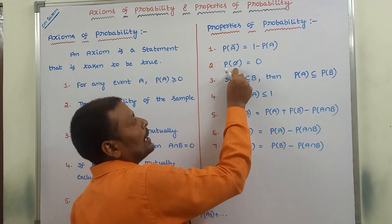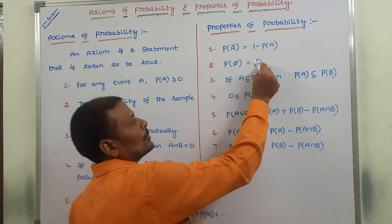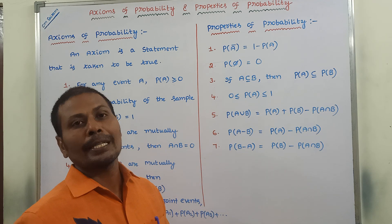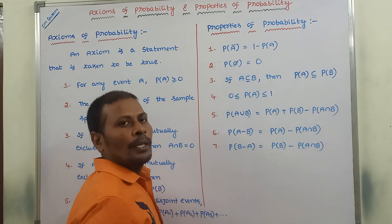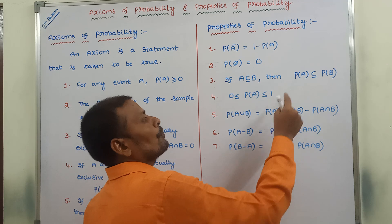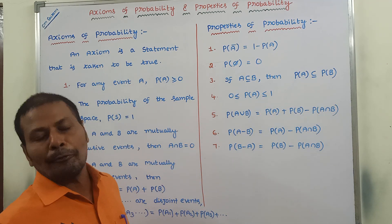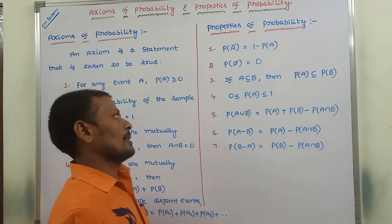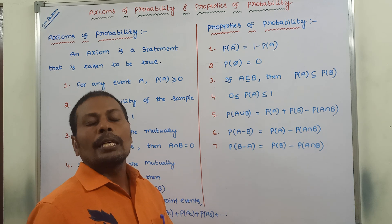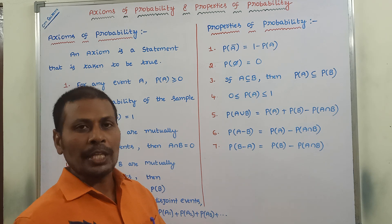Second one: probability of the null set, that is P of phi (∅), is equal to 0. That means the probability of the empty set or null set is equal to 0. Third point: if A is a subset of B, then the probability of A is also a subset of the probability of B. Fourth point: if A is an event, the probability of that event always lies between 0 and 1.